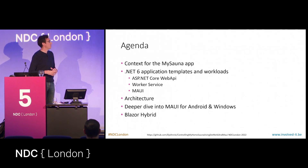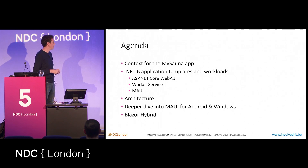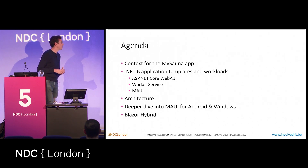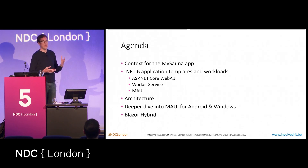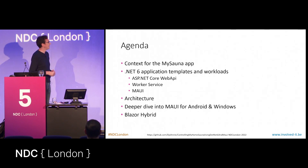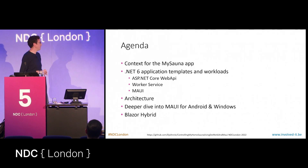First, I will give you some context on what is actually happening at our home and why I had the idea of creating this application. I will talk about the .NET 6 application templates and workloads I've been using, like the Web API and the Worker Service. I will also share my experience with migrating from Xamarin.Forms to MAUI — what are the differences, what went wrong. I want to talk about the architecture, give you a deeper dive into MAUI, and then take a sneak peek into the Blazor Hybrid or MAUI Blazor templates.